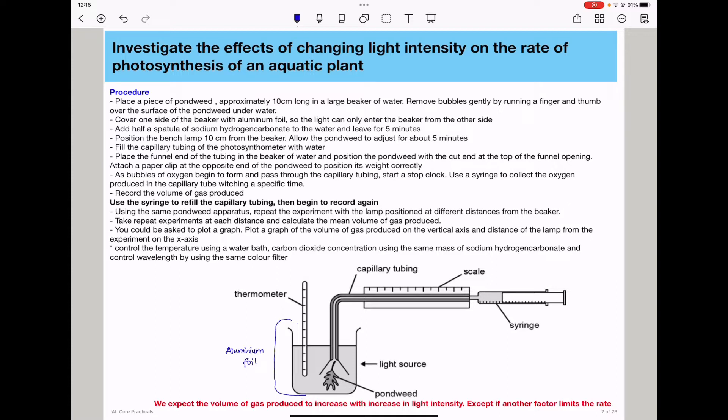We will then cut the Canadian pondweed plant. In some experiments, they cut it underwater in order to prevent bubbles from forming at this position here. You do not want bubbles of gas to be trapped there. However, in this description, I have talked about the idea of cutting it and then rubbing it with your fingers in order to prevent or remove any bubbles that could have formed.